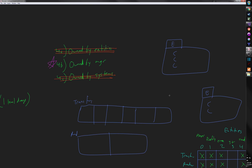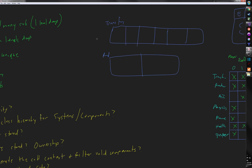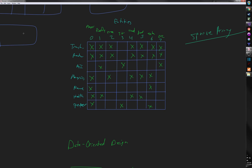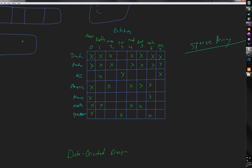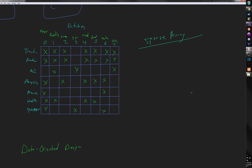Remember how arrays work — they're blocks that use pointer arithmetic, so you have to incur the cost of the empty space. There are only eight entities in this world, but imagine more. We can't do this as a 2D array. This is a classic computer science problem: the sparse array problem. If you have a sparsely packed array, it's mostly wasteful. You want densely packed arrays.